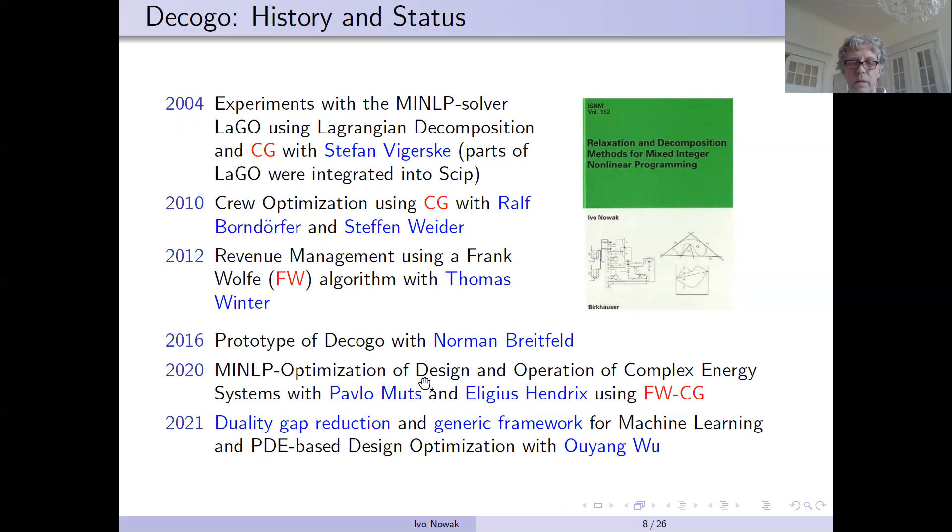And then we really developed DECOGO together with Pablo Mutze and Eligius Hendrix, where we developed this Frank-Wolfe column generation approach for solving energy system planning problems.